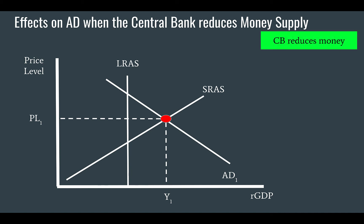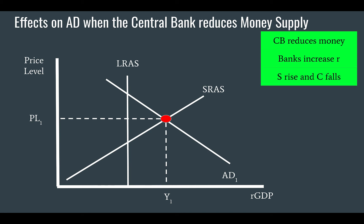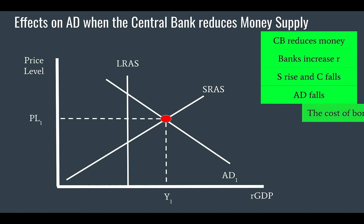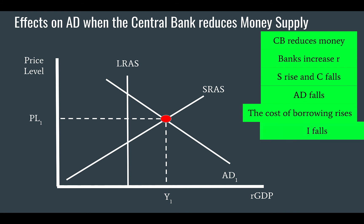So what did the central bank do? The central bank reduced the money supply. Banks therefore have to increase their interest rate to try to recoup some of the lost profits from the reduced lending. That means savings rises and consumption falls — S stands for saving, C stands for consumption — and that will reduce aggregate demand. That's how it affects the C in the aggregate demand equation. Also, don't forget the cost of borrowing rises, so fewer investment opportunities are now profitable compared to what they were before with the lower interest rate.